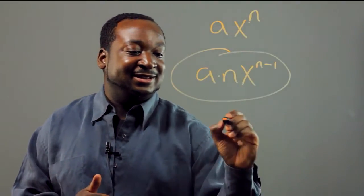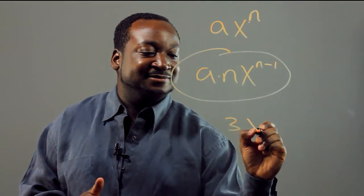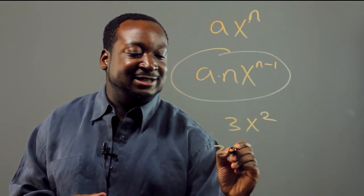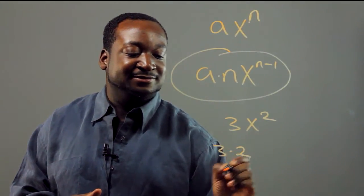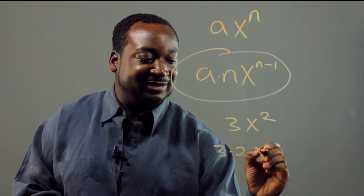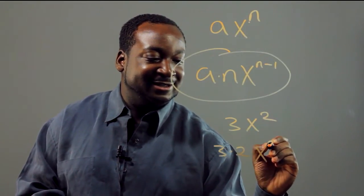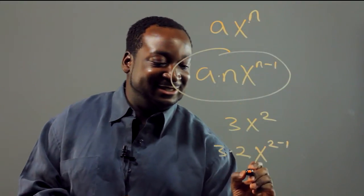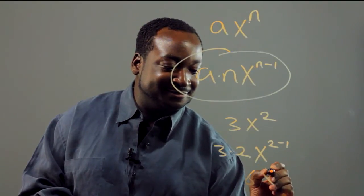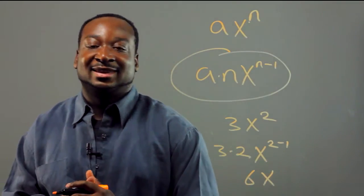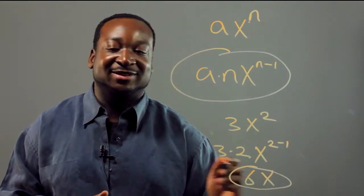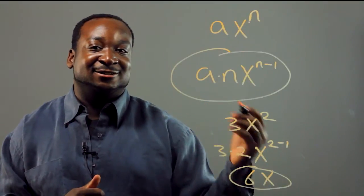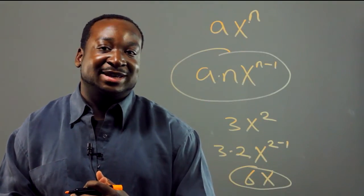Now let's apply it. Let's take 3x squared. That's going to be 3 times 2, multiplied by x to the 2 minus 1, and basically you get 6x. Here's our answer — that's the derivative. That's a simple way of how to take a derivative, and that's some basic calculus.